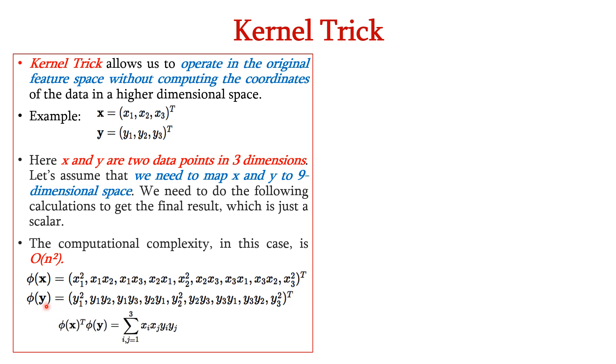In the same way, we can represent φ(y). So, in short, we can write this as φ(x)ᵀ·φ(y) equals summation of xi·xj·yi·yj where i and j equals 1, 2, 3.